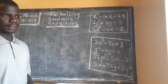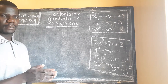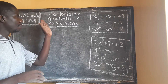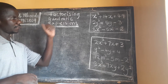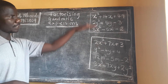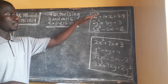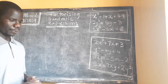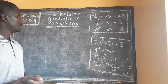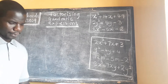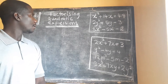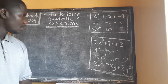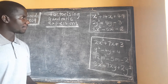So we are looking at the last part of factorization. We have done all four methods of factorization, and this is the last one — quadratic expressions. These are what we call quadratic expressions. So what is the process of factorizing a quadratic expression?